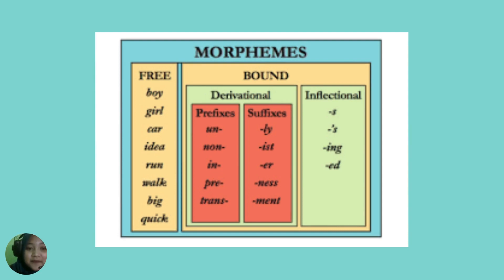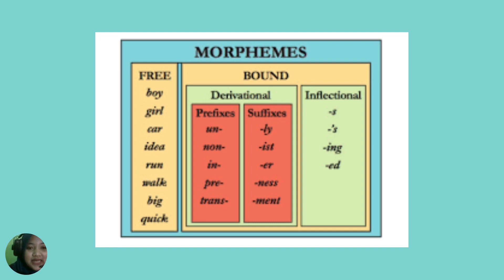Jadi, Morpheme ini terbagi menjadi dua, yaitu yang pertama adalah Free Morpheme. Free Morpheme ini adalah Morpheme yang bisa berdiri sendiri. Dan yang kedua adalah Bound Morpheme. Bound Morpheme ini adalah Morpheme yang harus ada Free Morpheme-nya, jadi dia tidak bisa berdiri sendiri.